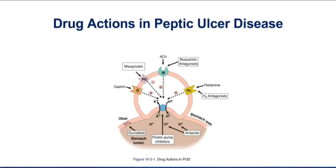You also see a number of other drugs that can work in the lumen of the stomach. Let's start with the most popular drugs for peptic ulcer disease — that would be H2 blockers and proton pump inhibitors.